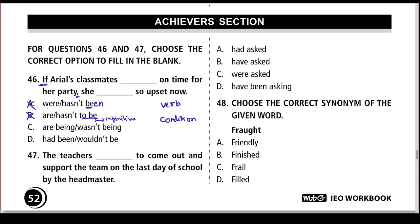What we are left with is: 'If Ariel's classmates had been on time for her party, she wouldn't be so upset now.' The grammar rule here says that in sentences where conditions are placed for a real or unreal action, we generally use the past perfect tense if the action is thought of as completed in the past. The arrival of friends is completed in the past, so 'had been' is the correct form. In the second part of the sentence, we use modals like 'would,' 'could,' or 'might.' I hope this clears your doubt about conditional sentences — all the very best!